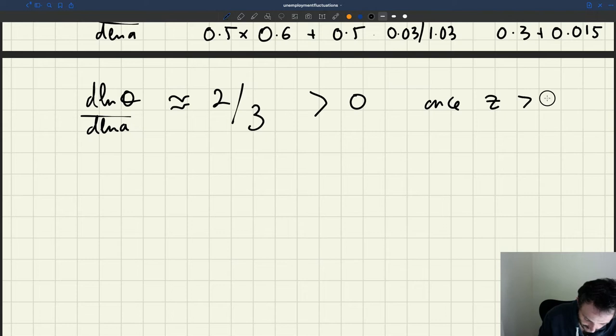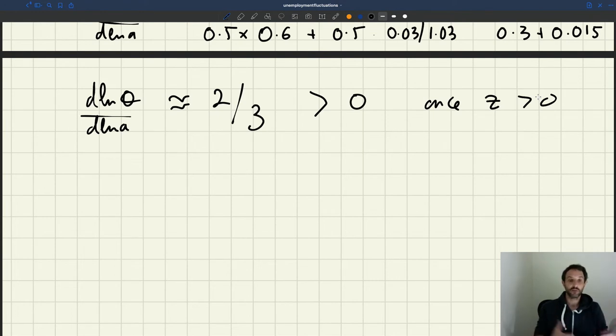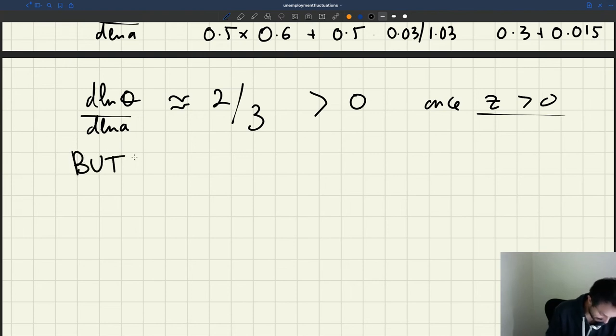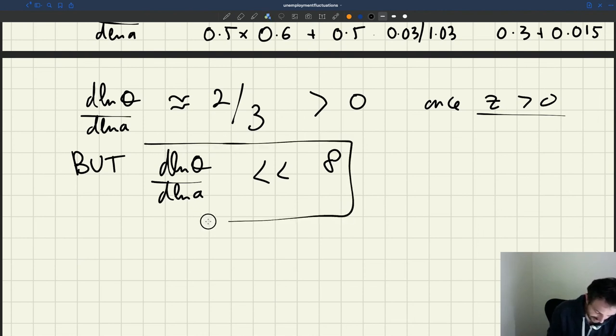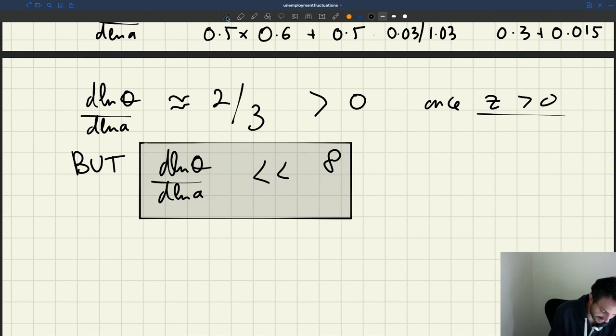So now what is the calibrated value of D log theta D log A? Well, using all the numbers we've introduced here, we'll have 1 minus beta Z in the numerator. So 1 minus beta Z, that's going to be 0.4 times 0.5, that's 1 minus beta. Then the denominator, we have A which is just 1. So we have beta R theta, beta is 0.5, R theta is 0.6, plus we have a last term, eta tau over 1 plus tau, that's going to be actually tiny, eta is 0.5, then tau over 1 plus tau is 3 percent, 0.03 divided by 1.03. This is going to be essentially 0. So we have 0.2 here, then we have 0.3 here, and then we have something that's going to be roughly 0.015. So this is telling us that d log theta d log A is essentially 2 thirds. And in particular, this is positive, which means that once we introduce a z that's not 0 but 0.4, we do get some fluctuation. So once z is positive, we do get some fluctuation in tightness. When productivity goes up, tightness goes up a little bit. But the point is that quantitatively, and that's a key point of the Shimer paper, is that d log theta d log A is way, way smaller than 8, which was the numerical value we're targeting to match what we see in US data.